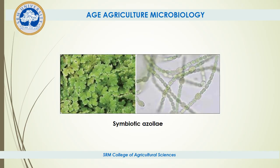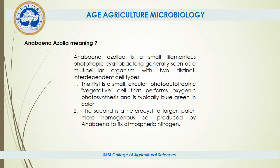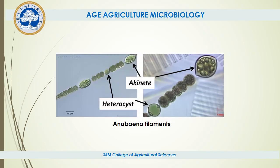The first picture shows Anabaena Azolla and the second picture represents the Heterocyst. Anabaena Azolla is a phototrophic cyanobacteria which has two independent cell types: one is the vegetative cell that performs oxygenic photosynthesis, and the second is the Heterocyst, a homogeneous cell which fixes atmospheric nitrogen. In the filament of Anabaena, the Heterocyst fixes nitrogen under the Azolla water fern.